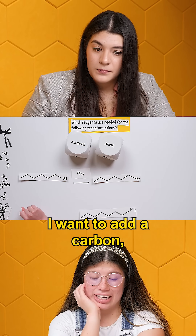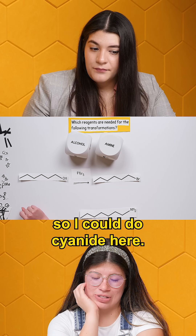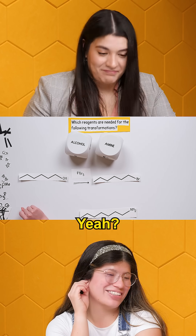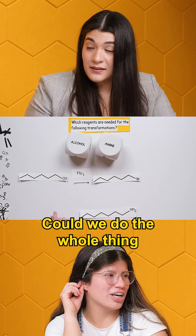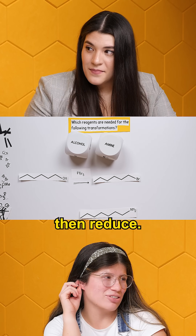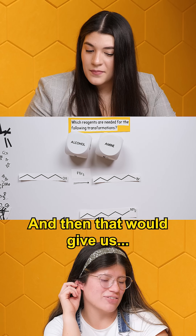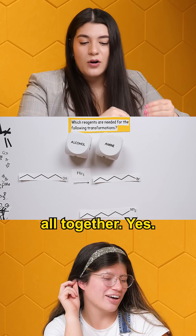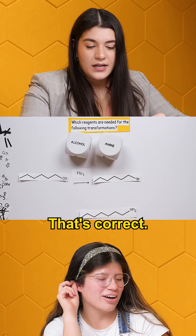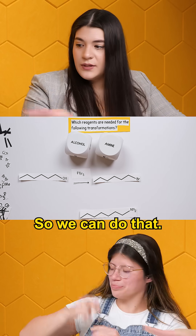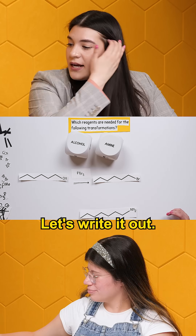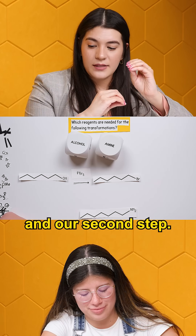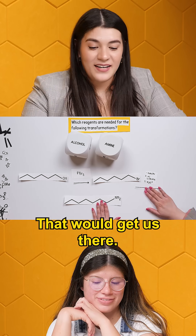I want to add a carbon, so I could do cyanide here. Could we do the whole thing and go NACN, then reduce, and then that would give us — those are the only two steps left? You could put them all together, yes. That's correct. So we can do that. Let's write it out, making sure we know our first step and our second step. That would get us there.